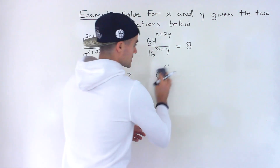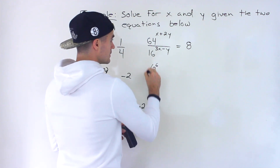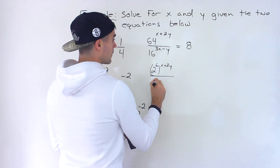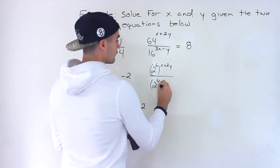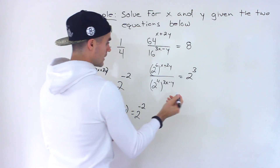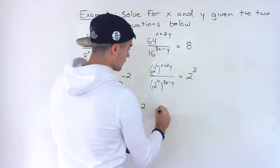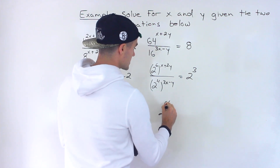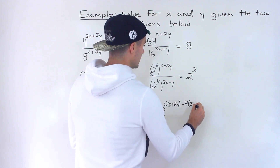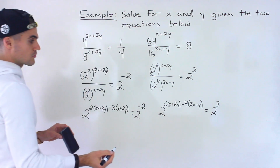Following the same process for the second equation: 64 becomes 2 to the power of 6, with (x + 2y); 16 becomes 2 to the power of 4, with (3x - y); and 8 becomes 2 to the power of 3. So the left side rewrites as 2 to the power of 6·(x + 2y) minus 4·(3x - y), all equal to 2 to the power of 3.